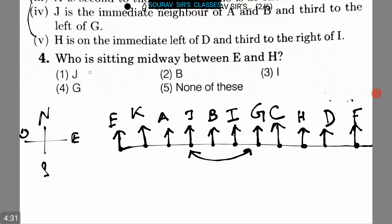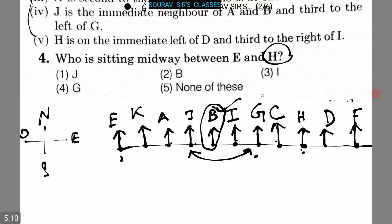The first question is: who is sitting midway between E and G? Between E and G there are one, two, three, four, five, six, seven positions. Counting between E and H gives one through nine, so B is the correct answer. B is sitting at the midway between E and H.